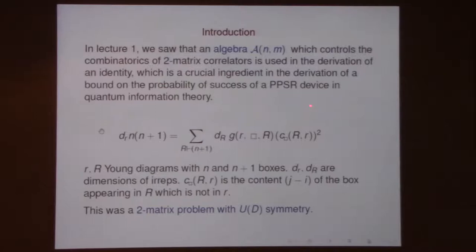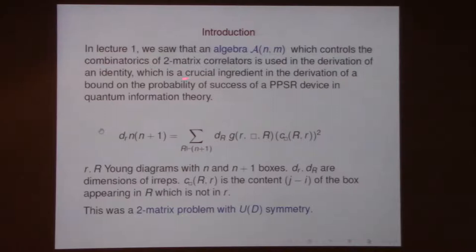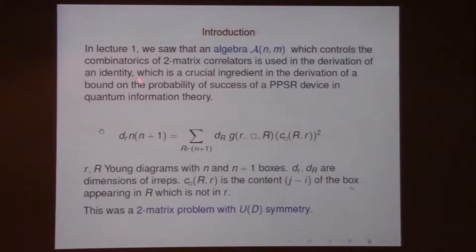A brief recap of the first lecture: we saw there is an algebra I call A(N,M), a nice associative algebra with a non-degenerate pairing that controls the combinatorics of two-matrix correlators. It seems to know a lot about Littlewood-Richardson coefficients, and it is used in the derivation of an identity which was a crucial ingredient in deriving a bound of interest in quantum information theory — related to approximate cloning of operators.